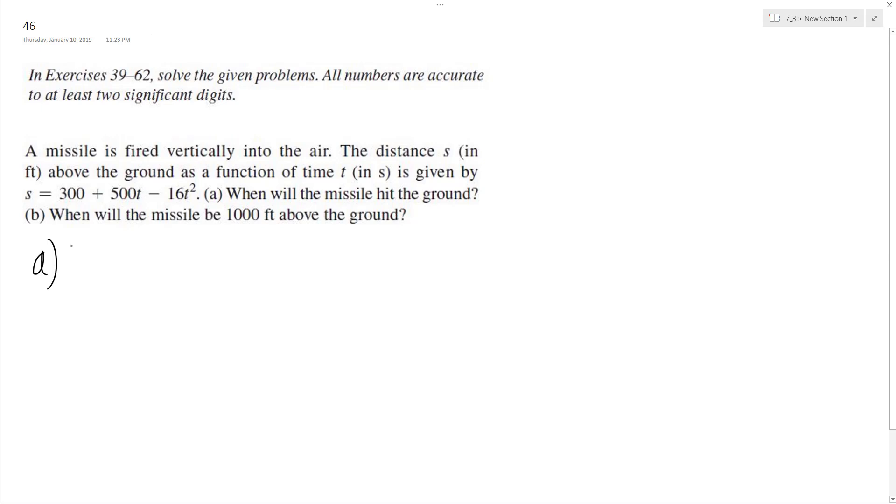So first part, part a, we're going to set the ground distance s equal to zero. It's going to have an initial time, probably zero or a negative value, but then we'll have a further value.